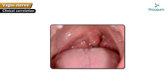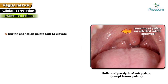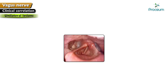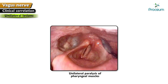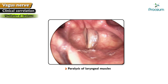Unilateral lesions of the vagus nerve cause unilateral paralysis of the soft palate, except the tensor palate. Due to this, lowering of the palate on the affected side is observed during phonation, the palate fails to elevate, and the uvula shifts to the normal side, resulting in nasal twang or nasal regurgitation of food. There is also unilateral paralysis of pharyngeal muscles causing deviation of the posterior pharyngeal wall, loss of gag reflex on the same side, and ipsilateral loss of sensations in the pharyngeal mucosa with paralysis of the laryngeal muscles.